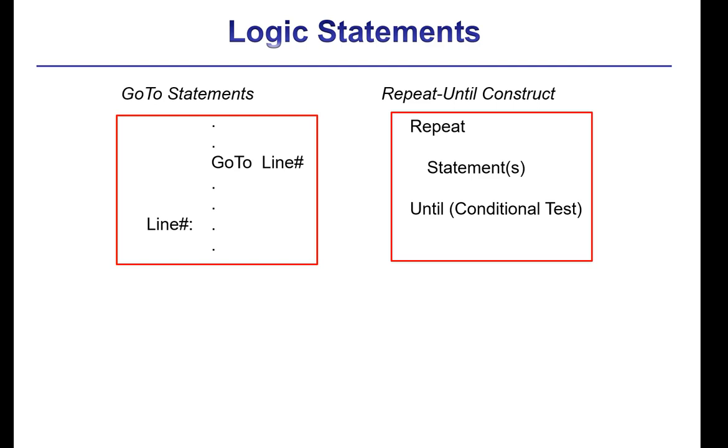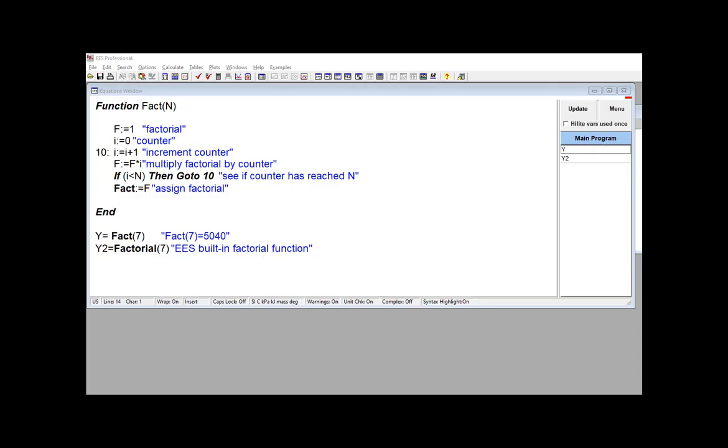The go-to statement really should be used with something like an if-then-else statement in order to be useful. So, for example, here's a function that uses a go-to statement in order to calculate the factorial of the value that's supplied as the argument.